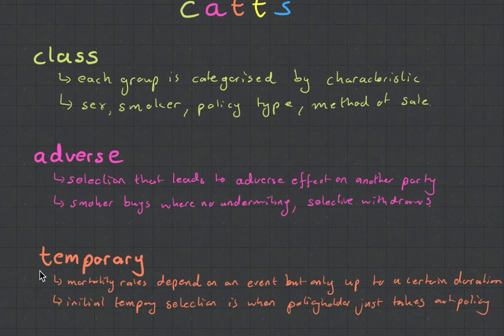And why we call it temporary is because in five years' time, when they're both 35, they'll both have the same mortality again. It's just the person, as he buys it, he's just gone through the healthy check and he's got this temporary initial selection.